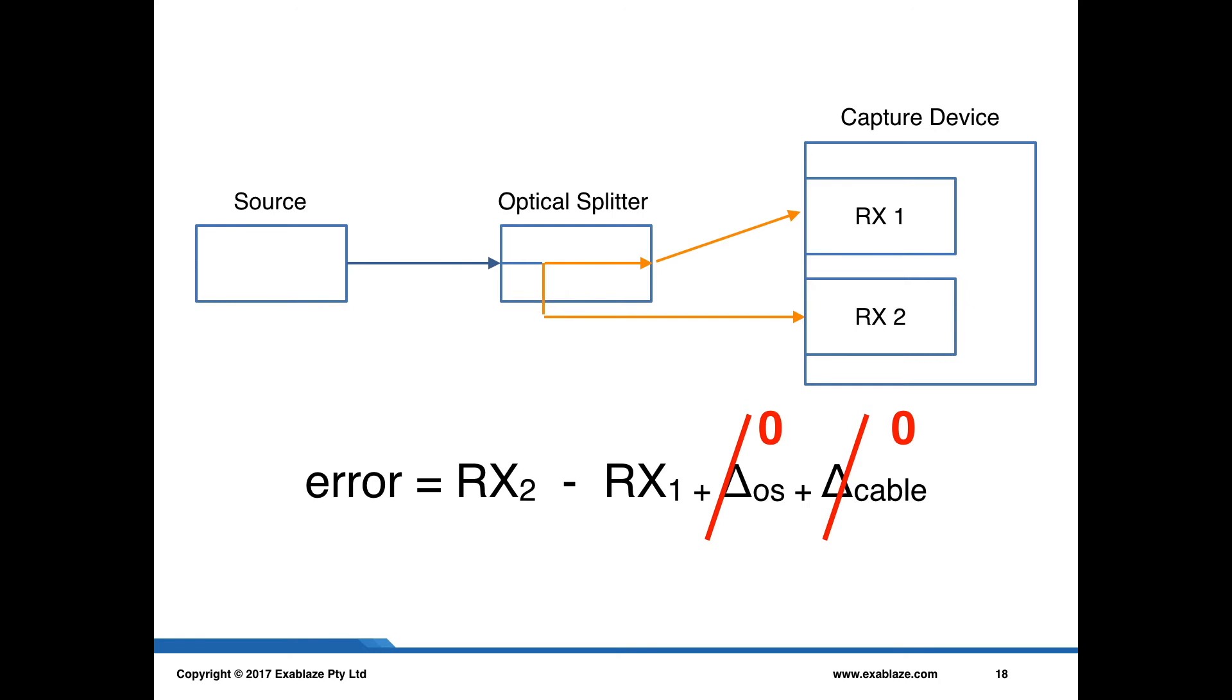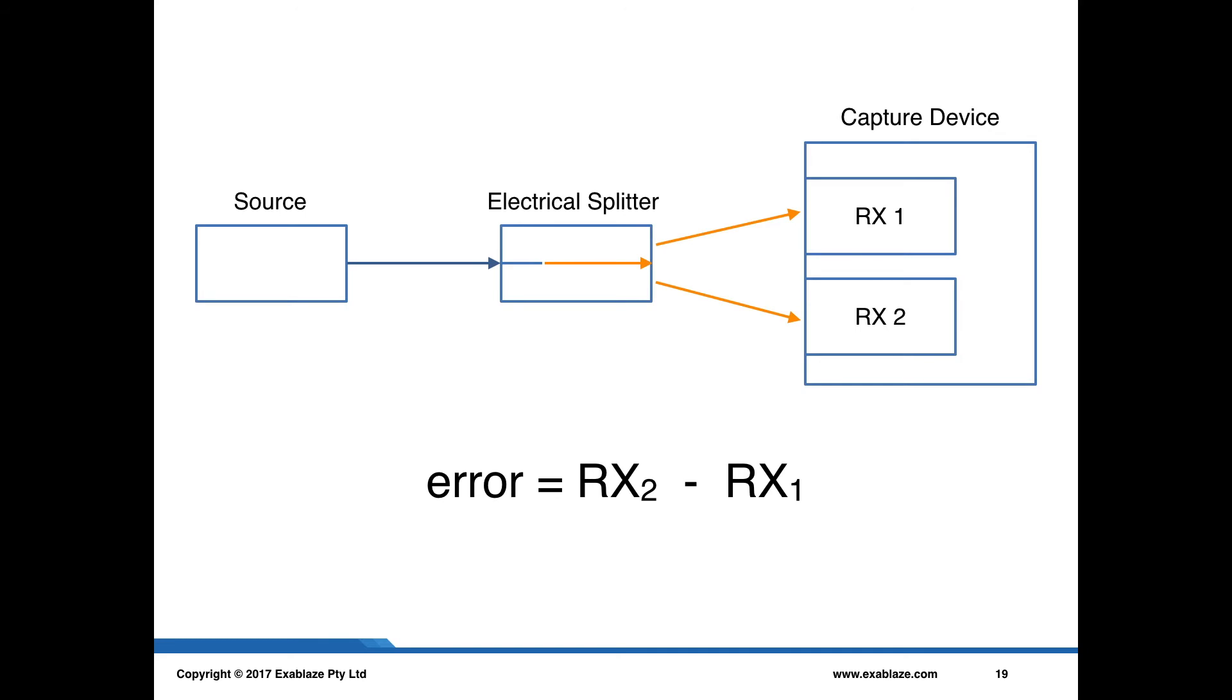So we thought about this problem a little bit, and we came up with a different way of doing it. And that is to use an electrical splitter instead of using an optical splitter. In this case, we can eliminate all of those bounds by being very careful about the way we arrange our circuit board and very carefully matching the track lengths that the signals propagate along.